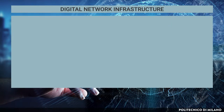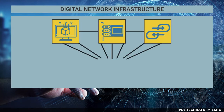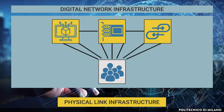A national telecommunication network is made of software, hardware, and physical links connecting central offices and final users. Among these three key ingredients, the physical link infrastructure — wired or wireless — is the one that policymakers should focus on when defining national strategies related to telecommunications.